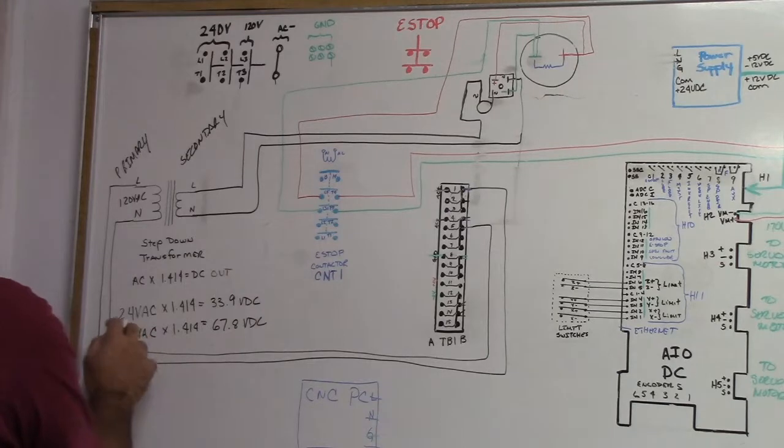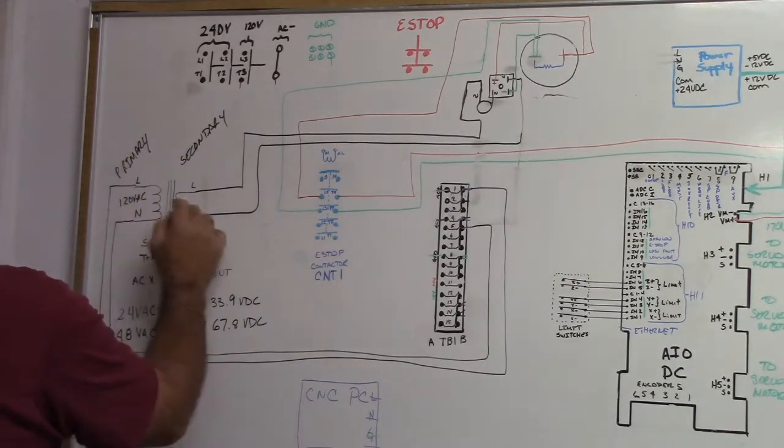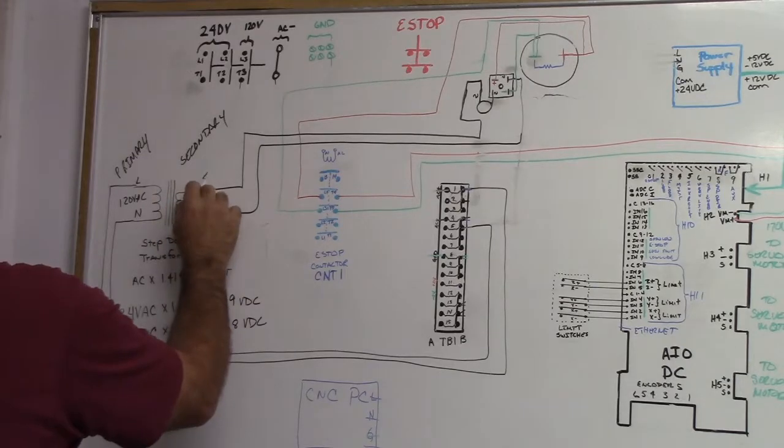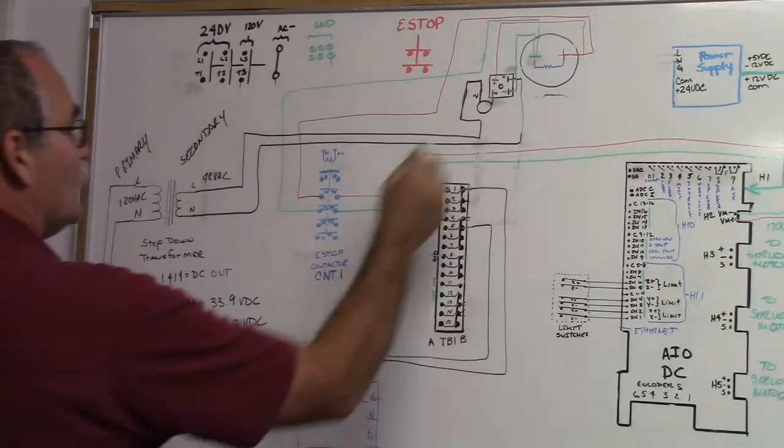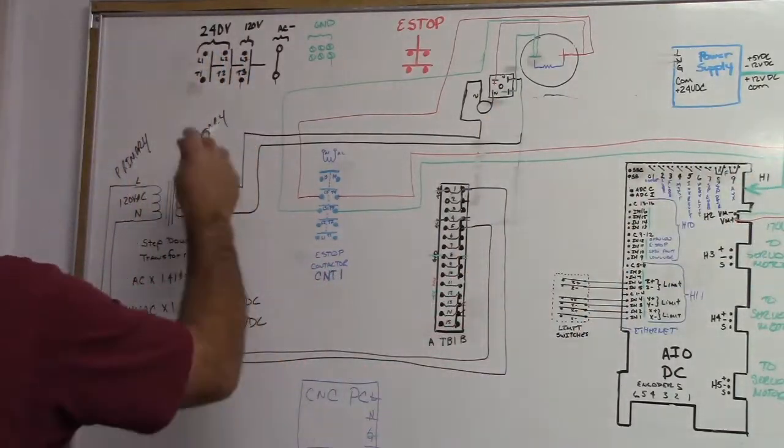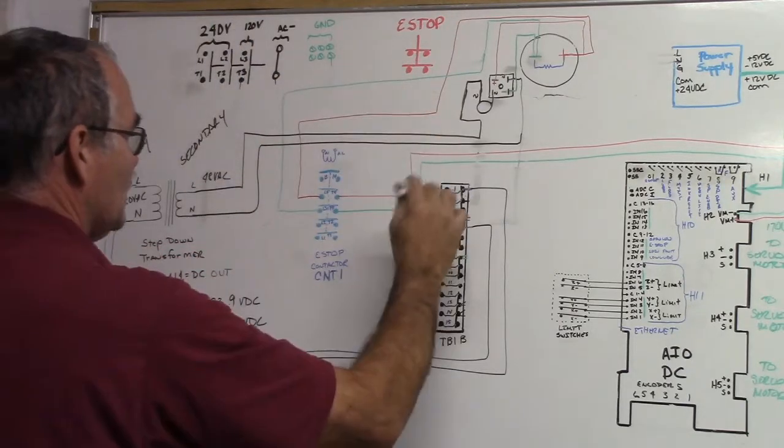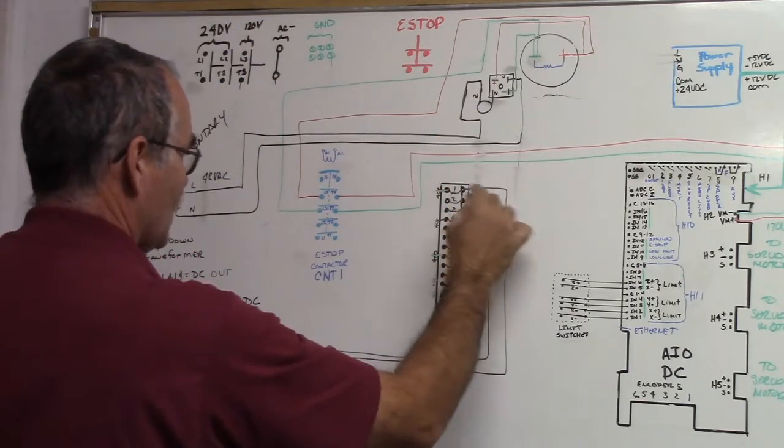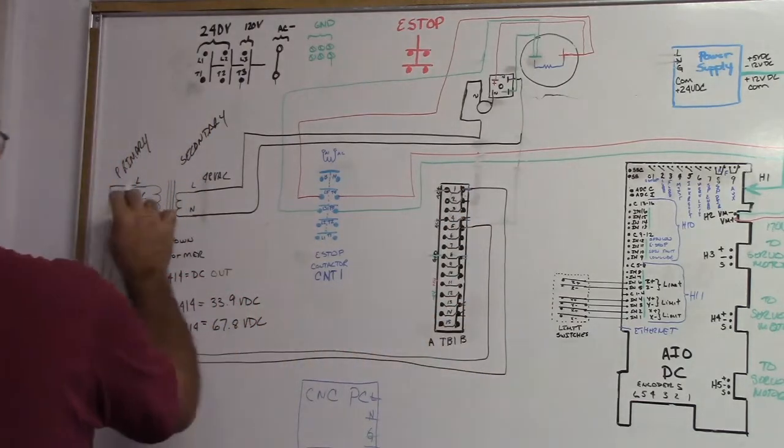So if you have, let's say we've used an example, a 48 volt step down transformer, 120 volt here, and then it steps down to 48 VAC here, then you're going to get 67.8 volts here. So you follow it. We already did this part, from the drum switch down here. So we got, let's assume we have AC here, AC positive line, neutral, line, neutral. So we got voltage here.